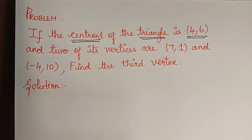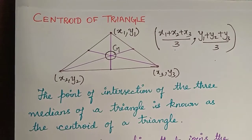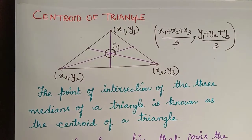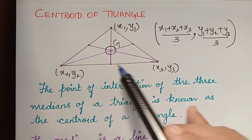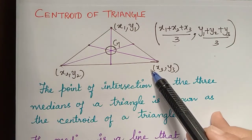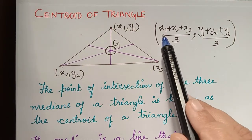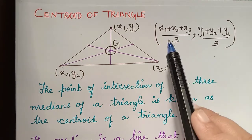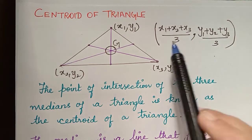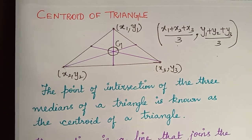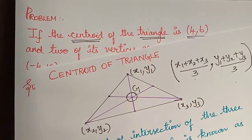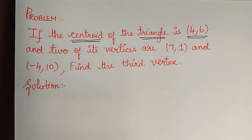We have already seen the formula for centroid of a triangle in our previous video. The centroid of the triangle with vertices (x1, y1), (x2, y2), (x3, y3) is given to be: x1 plus x2 plus x3 divided by 3, y1 plus y2 plus y3 divided by 3. This is the formula to find the centroid of a triangle.